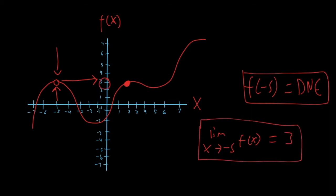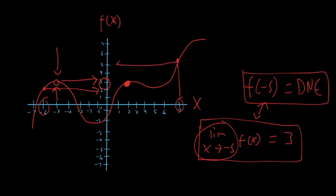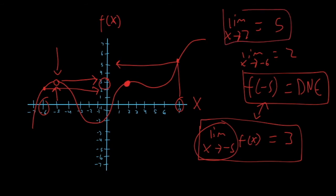So as you can see, this is a situation where the two answers actually differ. When you have a hole in your graph, you need to remember that the limit still exists. You can have a limit at any point — for example, at negative six the curve gives positive two, or at x equals seven it looks to be about positive five. You can have a limit at any point on the graph.